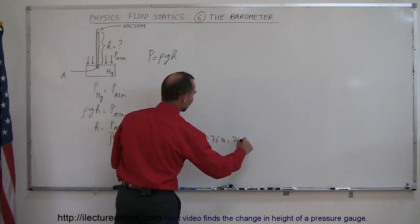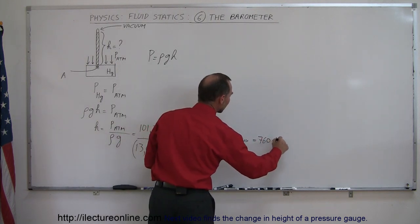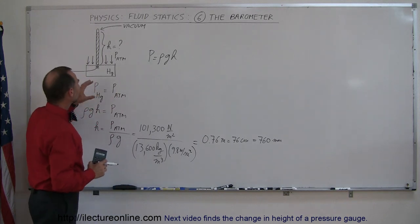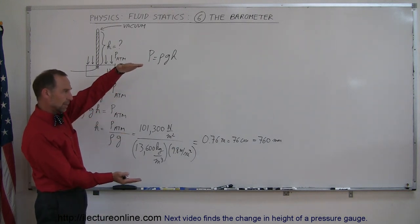And it turns out it is equal to 0.76 meters, which is 76 centimeters, which is 760 millimeters. So if you do this experiment, the column of mercury will take up a height of 76 centimeters, which is about 2.5 feet, maybe about like that.